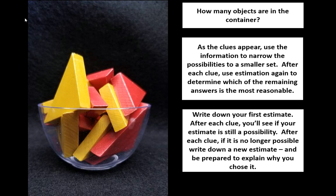After each clue, you have to see if your estimate is still a possibility. If it is no longer possible, you will need to write down a new estimate. And if you're playing at home, explain to each other why you chose your new estimate. At this point, you should have a number written down.